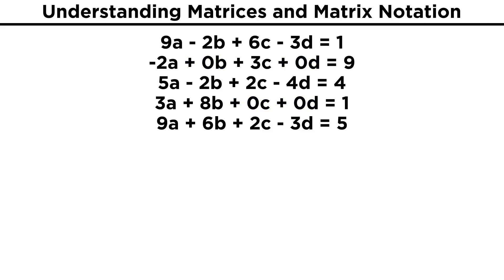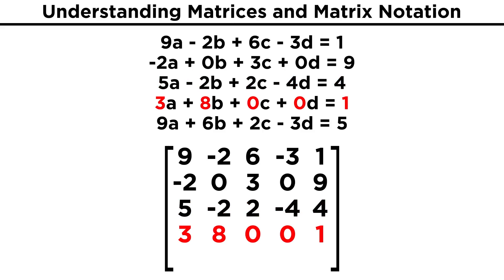Now we are all set. Each equation has the same variables in the same order, and all the variables are present with some coefficient, with a constant on the other side of the equal sign. Now to make the augmented matrix, we just take all of these numbers and place them where they go, equation by equation, row by row, and this resulting five by five matrix is what we will get.